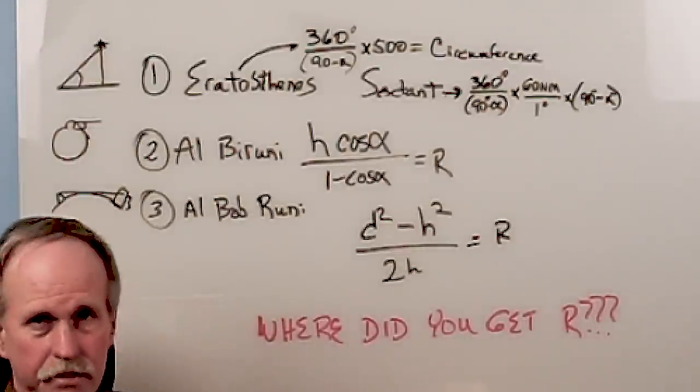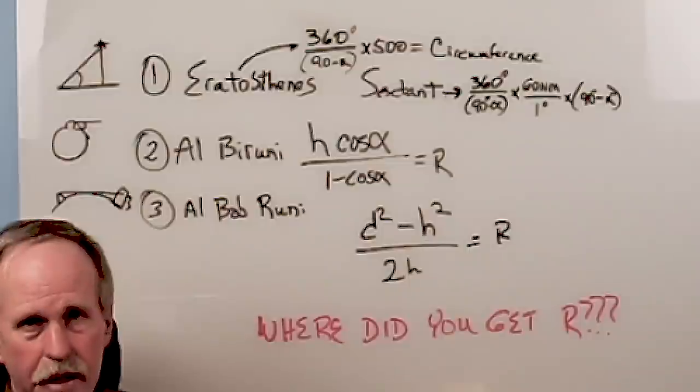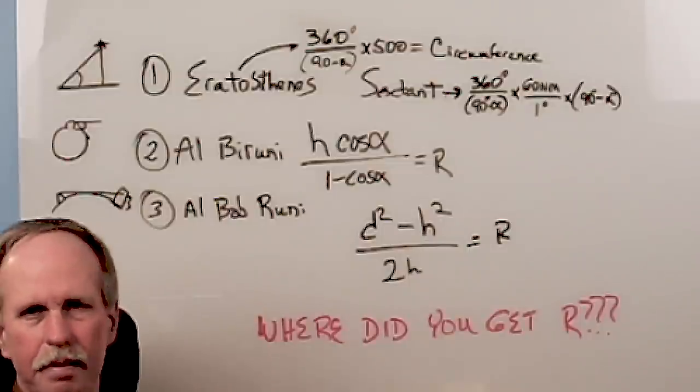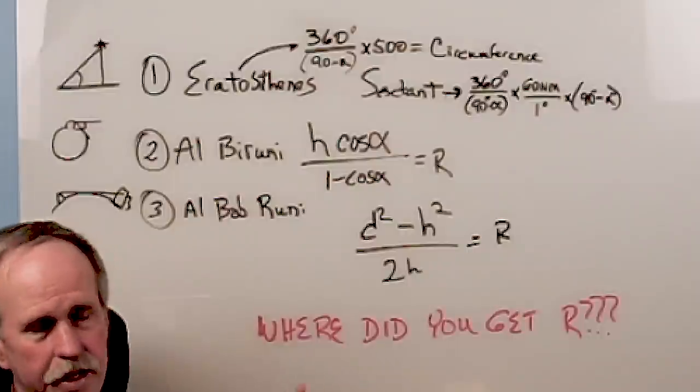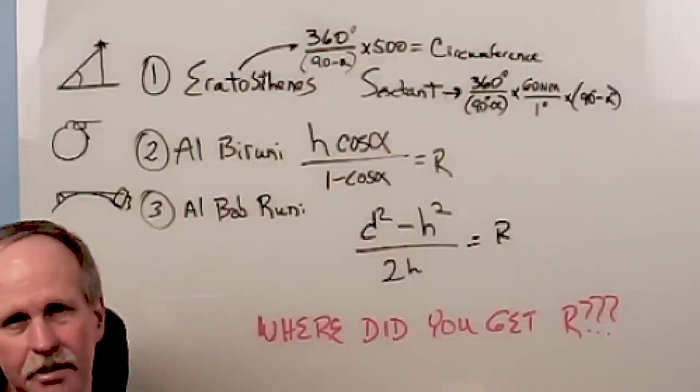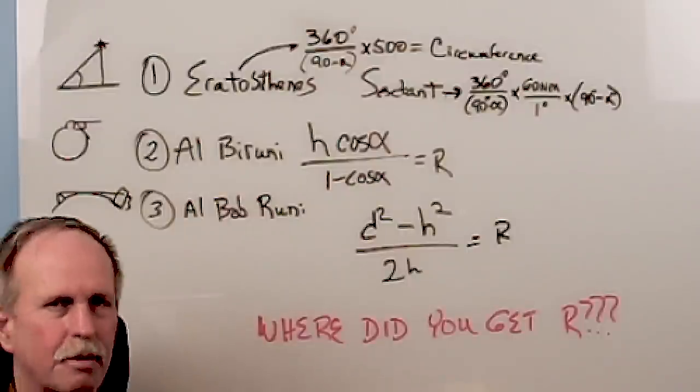We've derived this in other videos. I'm not going to do it again now. Now, recently, I came up with my own method for deriving the radius of the Earth directly, and thanks to Blue Marble Science, it has acquired the name, the method Al-Bob-Rouni.